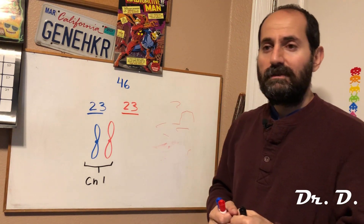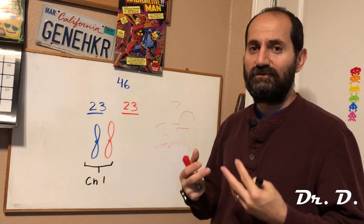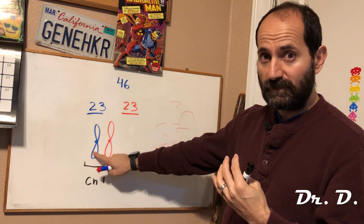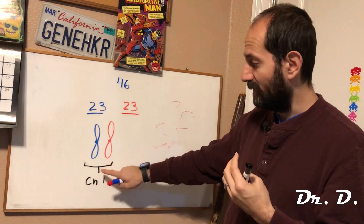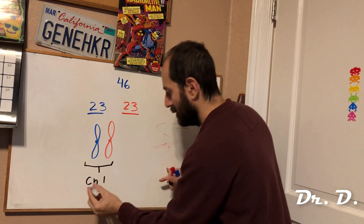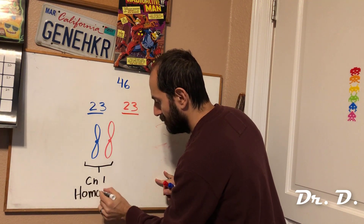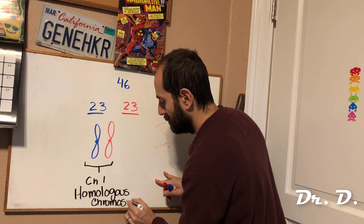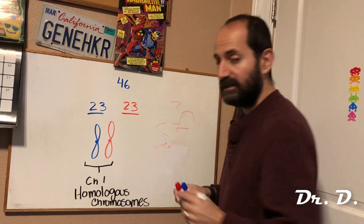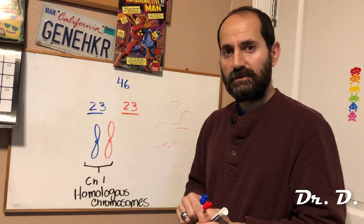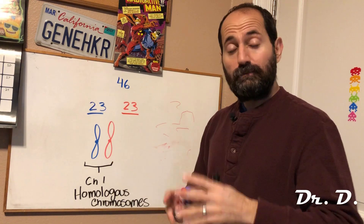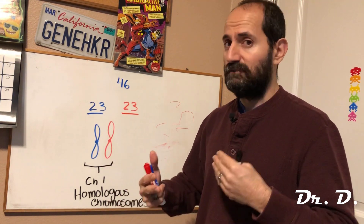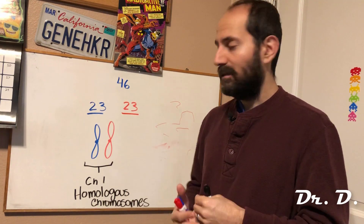What they do share in common is the same types of information — the same types of genes. And there's a term for this. You see how there's the paternally inherited chromosome from your dad and the maternally inherited chromosome one from your mom? They are called homologous chromosomes. Homologous chromosomes are not identical. Homologous chromosomes share the same chromosome number, but one was inherited from your dad and one from your mom. So they have the same types of genes, the same types of information, but they're not identical.